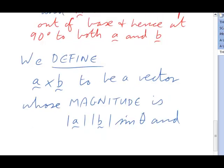OK, I've started to write that. A cross B is a vector whose magnitude is length a, length b,